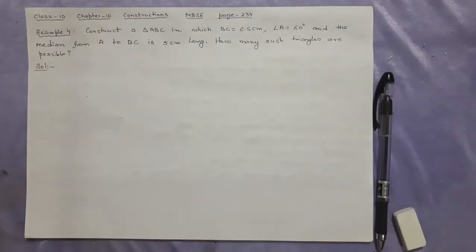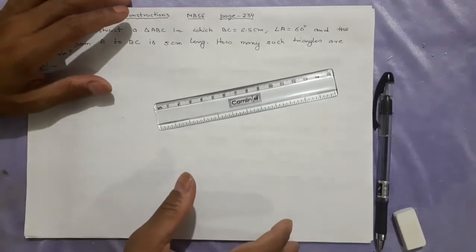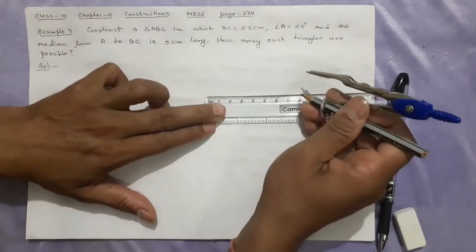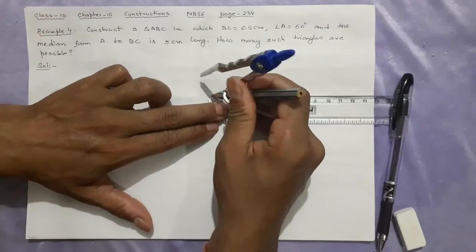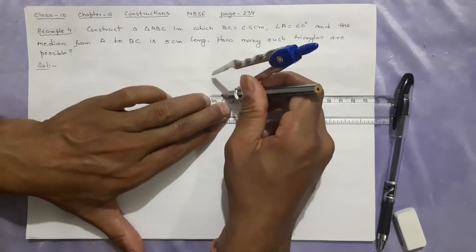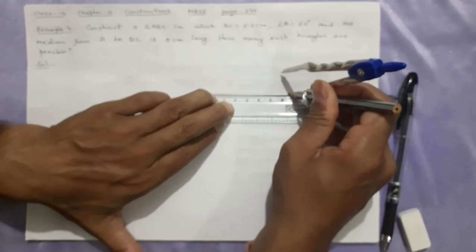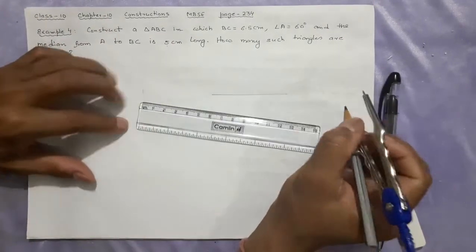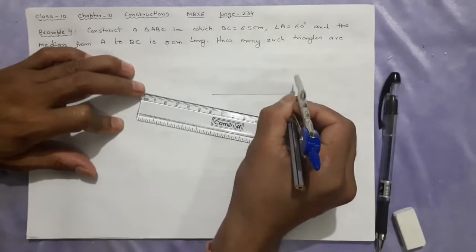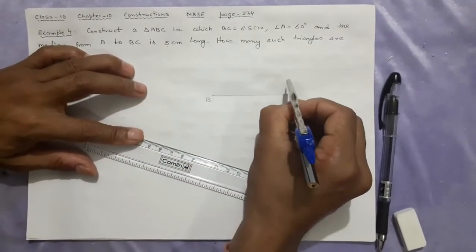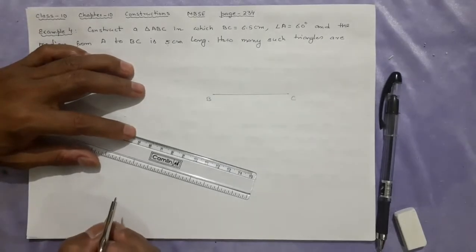Let's start. First thing is most of the process is similar, in fact easier than number 3. Once you do this practice 2 or 3 times, it will be a very easy exercise and highly scoring in your exams because you get full marks after writing these things. So this is B, this is C, 6.5 I have taken.